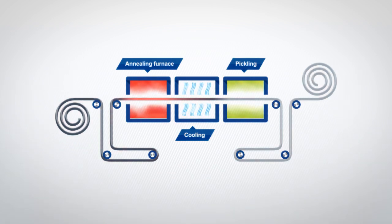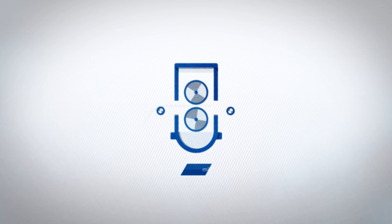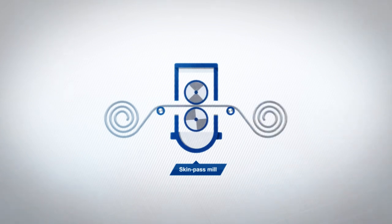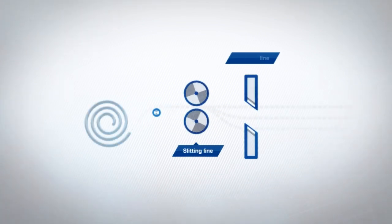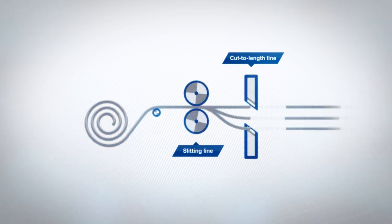After this, it undergoes a polishing treatment in the skin pass mill to improve its surface finish. The stainless steel products are now slightly shiny and have a good flatness. The stainless steel coil then reaches the slitting and cut to length lines, where the steel is finished to the required dimensions, either as coils or as individual sheets.